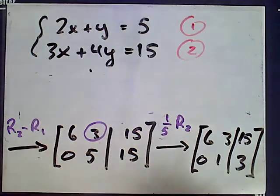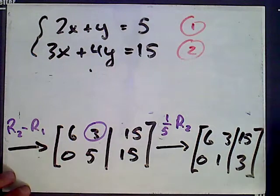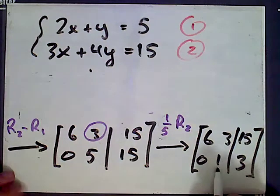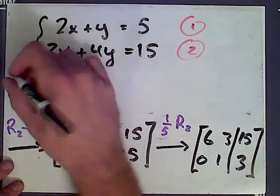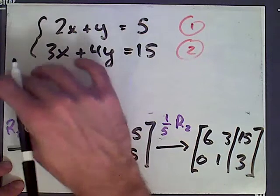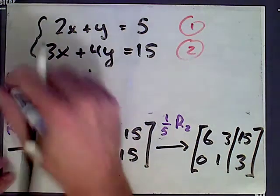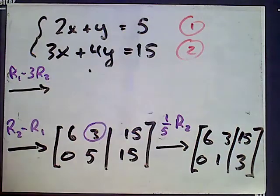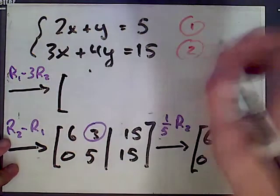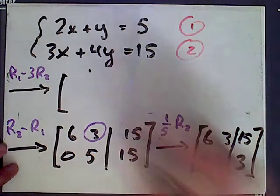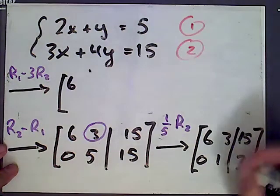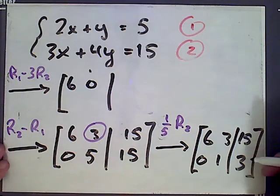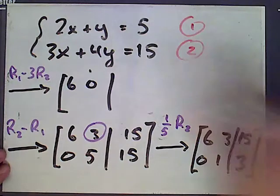So what we get - we have this matrix here. Now we want to clear this 3, so we take row 1 and subtract 3 times row 2. We get 6 minus any multiple of 0 just leaves 6, 3 minus 3 times 1 is 0, 15 minus 3 times 5, so subtract 9 from 15, that's going to leave 6.